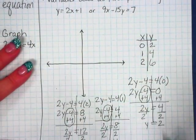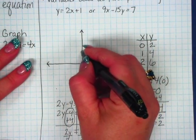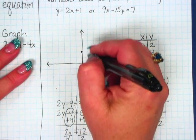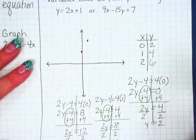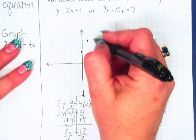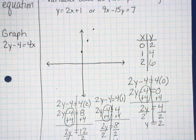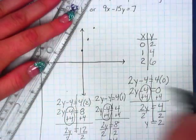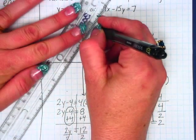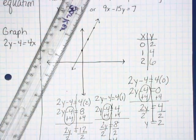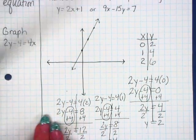Now we're going to graph that. 0, 2 puts you right there. 1, 4, so right there. And 2, 6 would put me right there. So then what we're going to do is we're going to connect those lines. And remember, arrows at the ends of both of them because they go on forever.